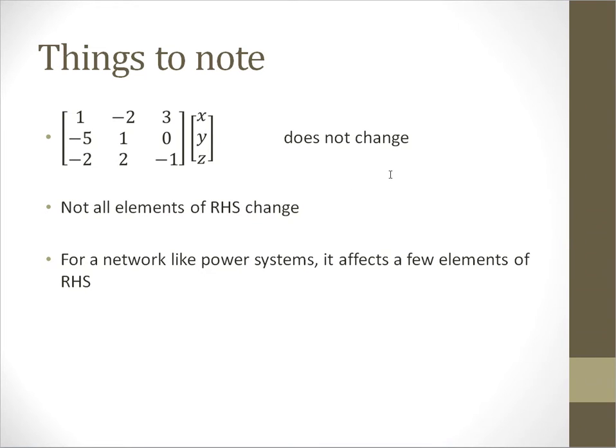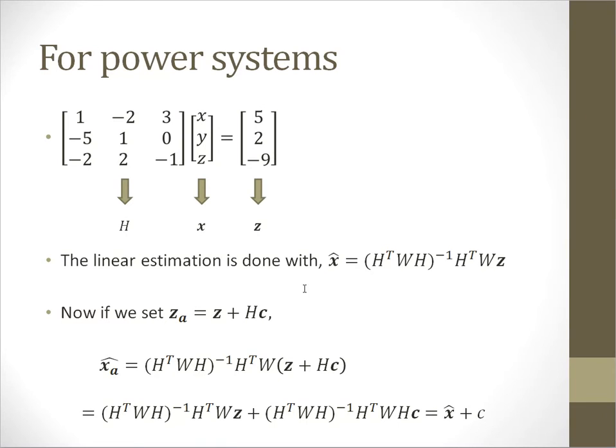Only a few elements get affected for any network like power systems. Now let's come to power systems. In state estimation, this matrix represents the Jacobian matrix, this one is the state vector, and this one is the measurement vector.